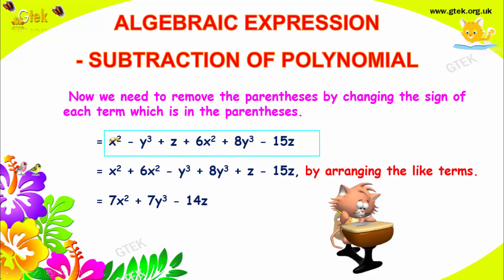Rearranging it, x square and x square will become plus 6 plus 1 is 7x square. Minus y cube and 8y cube, it will become 7y cube. Plus z and minus 15z will become minus 14z. So this is the answer.